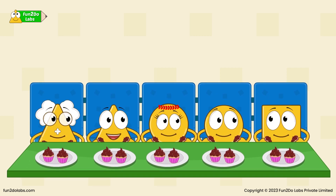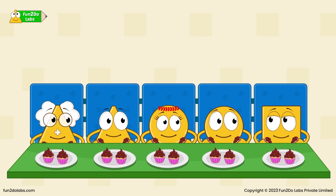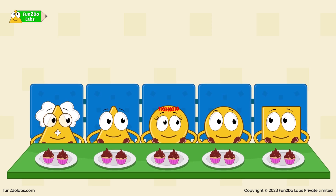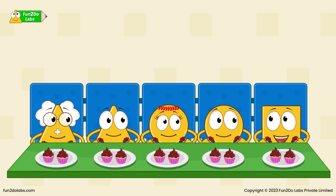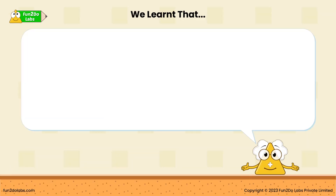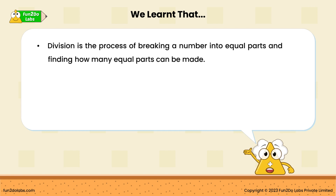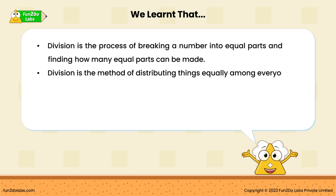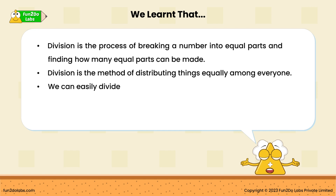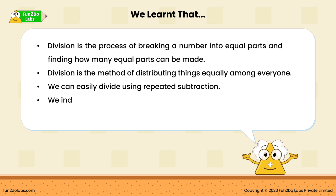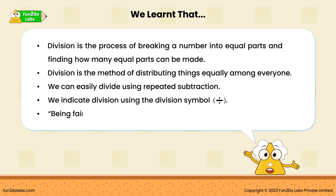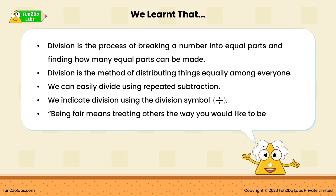Squaro, you were so hungry! And despite this, you shared all your cupcakes with us! You are awesome! I like to be fair when I share! We learned that division is the process of breaking a number into equal parts and finding how many equal parts can be made. Division is the method of distributing things equally among everyone. We can easily divide using repeated subtraction. We indicate division using the division symbol. Being fair means treating others the way you would like to be treated.